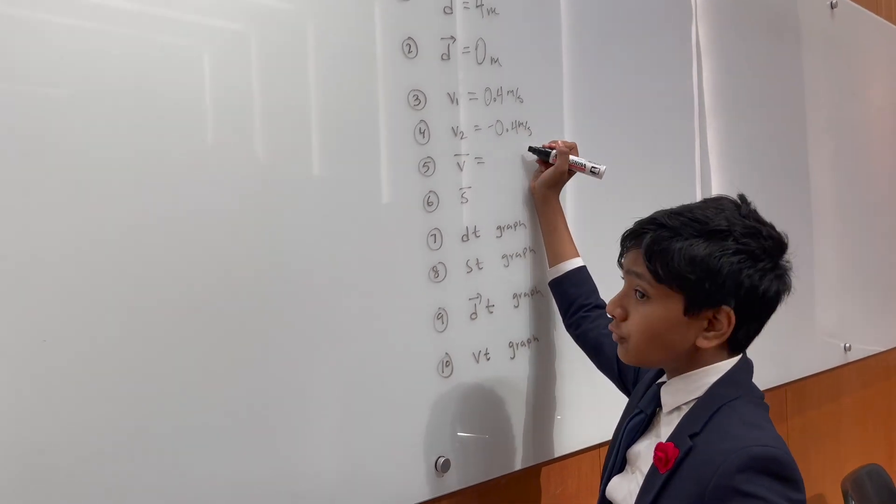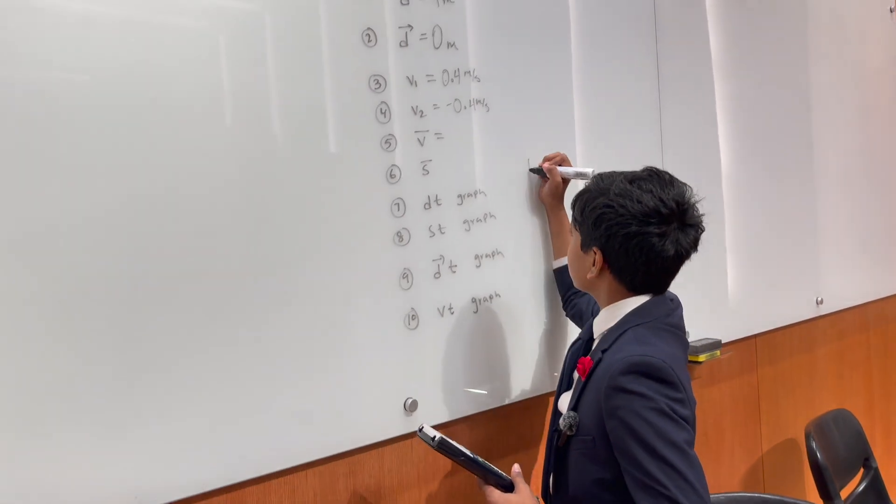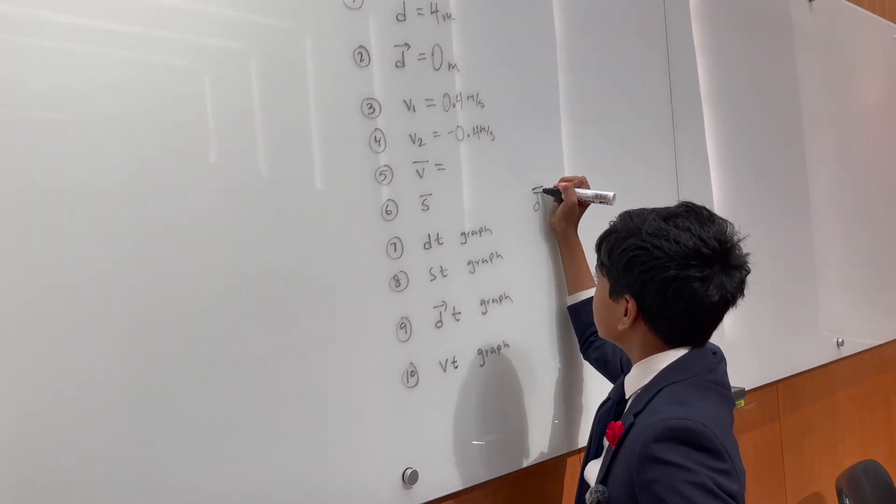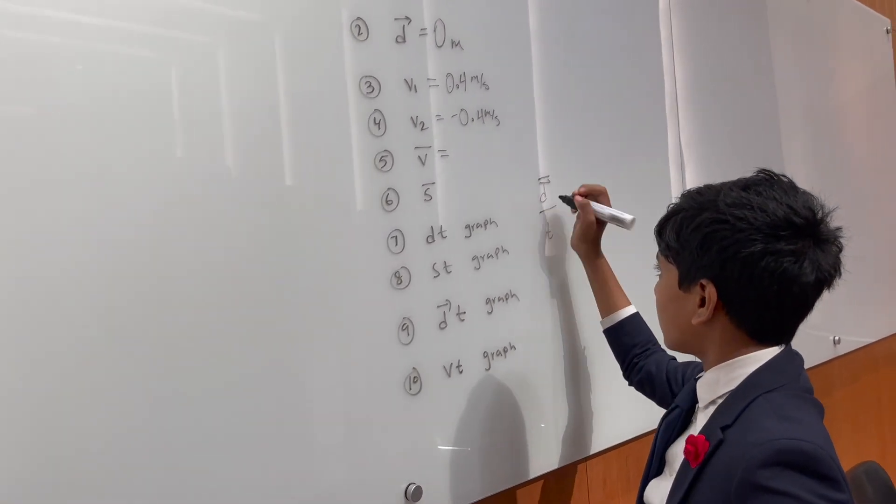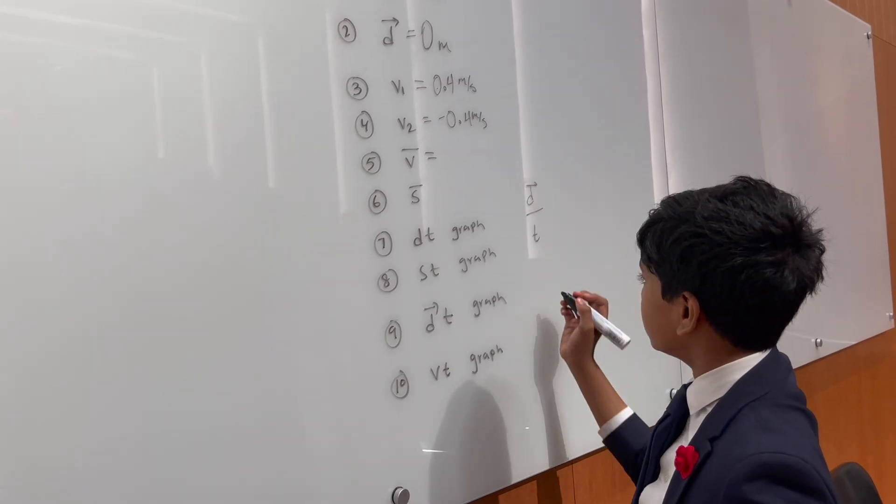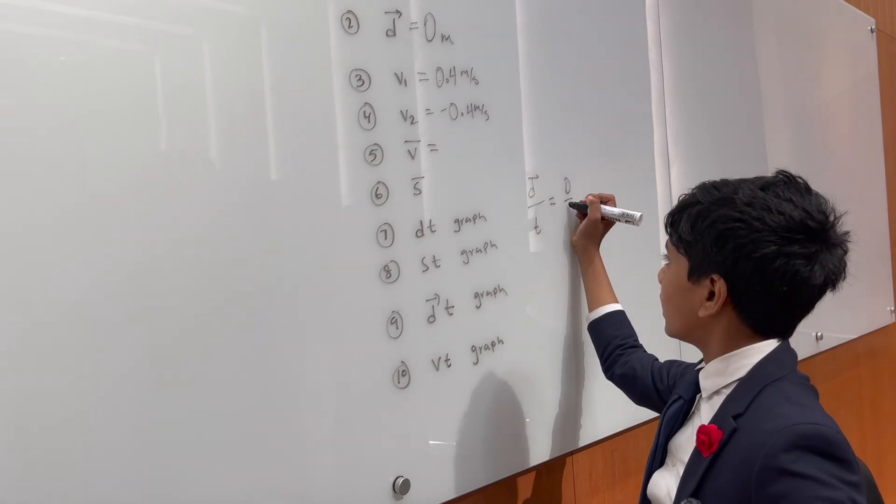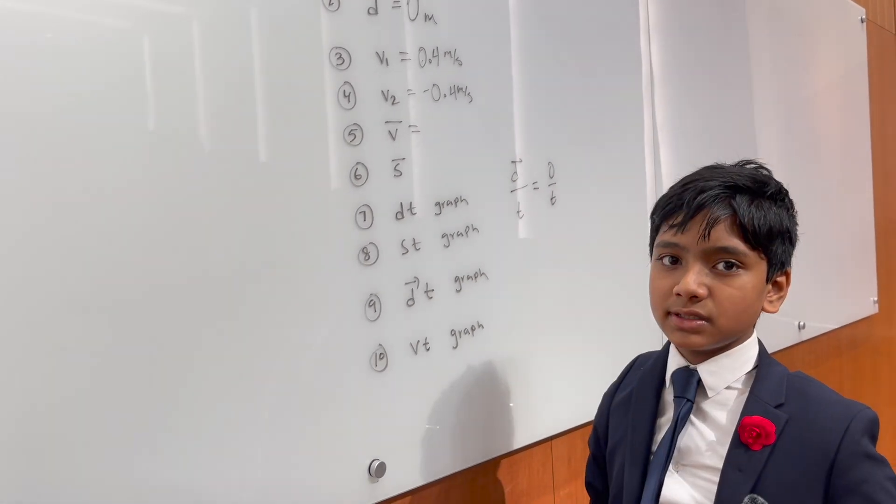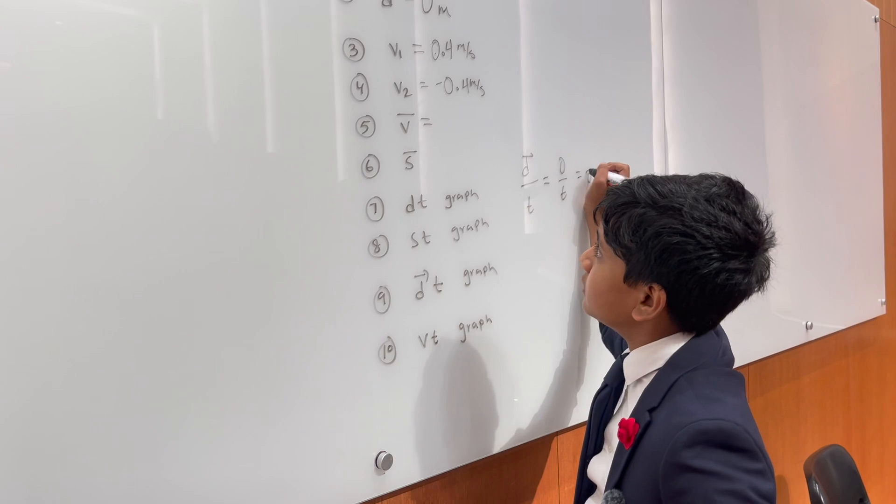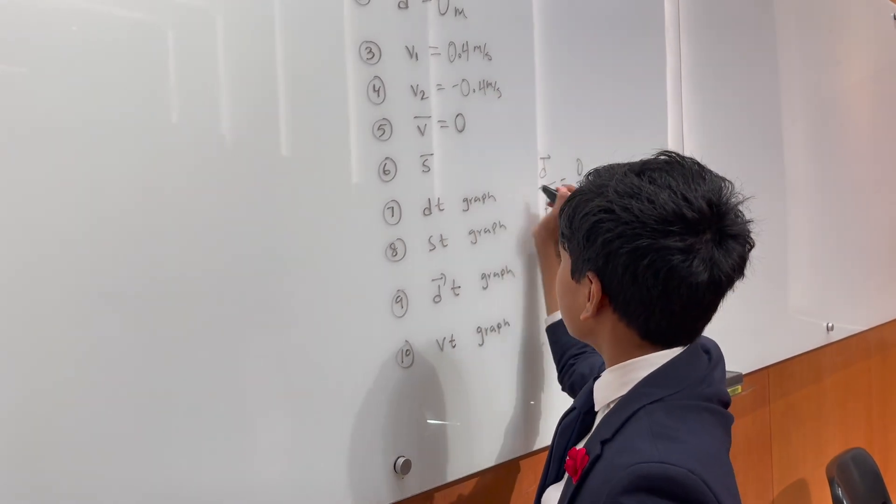The average velocity, well, it's 0 because it would be taking the average displacement over time. Well, no. The total displacement over time. But, the total displacement was 0 and it doesn't quite matter what the time is. So, that means the velocity, the average velocity is 0.